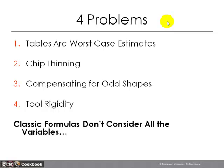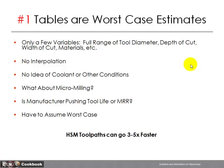Problem number one: the tables are just worst-case approximations. Problem number two: the simple formulas don't consider chip thinning. Number three: they don't compensate for odd-shaped cutters. And number four: they say nothing at all about tool rigidity, which has a lot to do with how your cut turns out. The bottom line is classic formulas don't consider all the variables. Let's look at each one of these in turn.